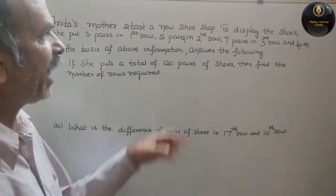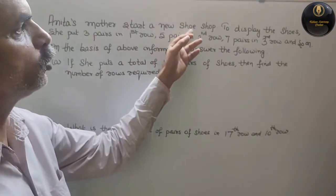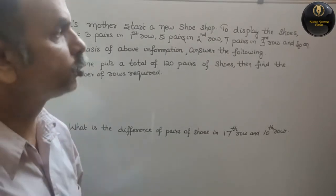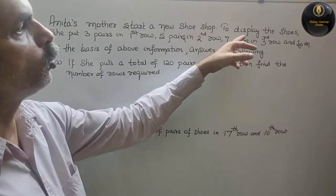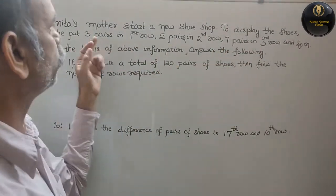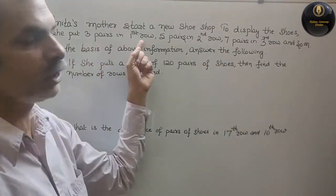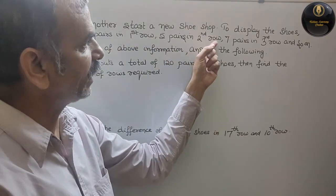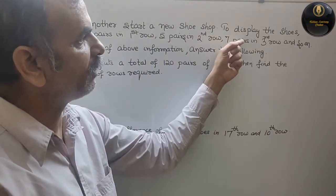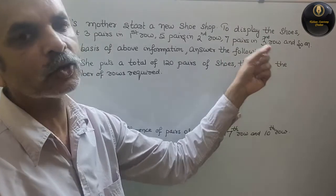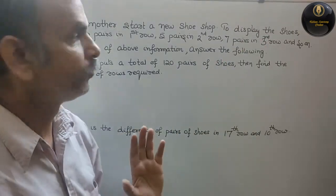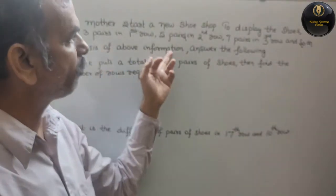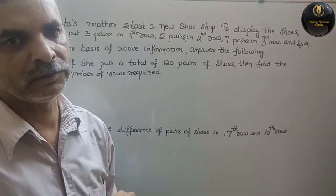Anita's mother starts a new shoe shop. To display the shoes, she puts 3 pairs in the first row, 5 pairs in the second row, 7 pairs in the third row, and so on. On the basis of the above information, answer the following.